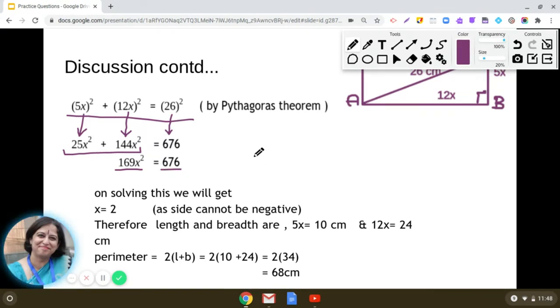Now 169x square is equal to 676. So what will be x square? So x square will be 676 divided by 169. And we know that 676 is square of 26 and 169 is square of 13. So what will be the value of x? After solving we get x as 2. So this will be the common factor.